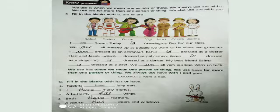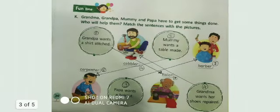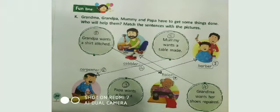Now take page number 30. Grandpa, mommy and papa have to get some things done. Who will help them? Match the sentences with the pictures. Grandpa wants a shirt stitched — a tailor will help him. Mommy wants a table made — a carpenter will help her. Papa wants a haircut — a barber will help him. Grandma wants her shoes repaired — a cobbler will help her.